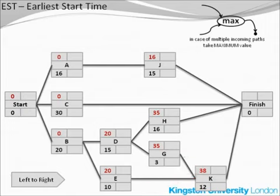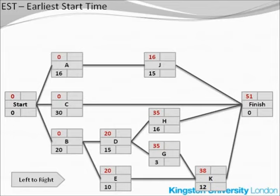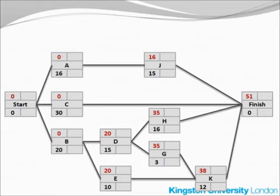A similar case we now have with the finish node — the only node left without the earliest start time. The incoming values are 30, 30, 51, and 50. The maximum value of them all is 51. Therefore 51 is the earliest start time of the finish node, and in fact it is the duration of the entire project — this is the earliest time in which the project can be finished. We have now completed the calculation of EST.